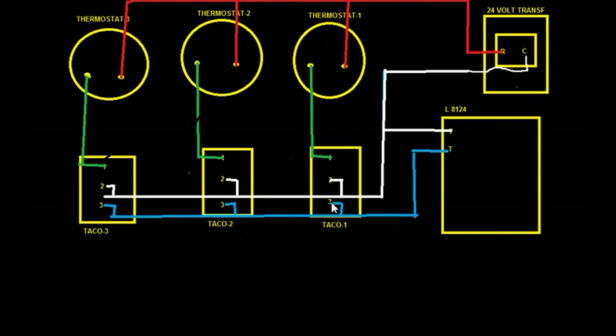It makes a circuit with TNT to TT and the control 8124, telling the burner to go on.